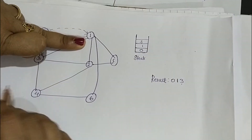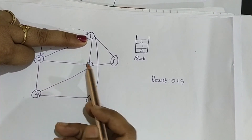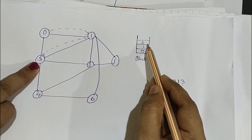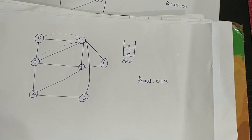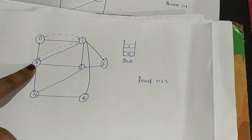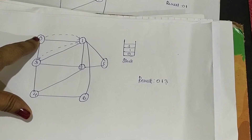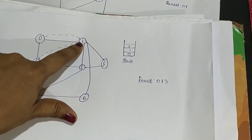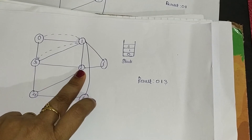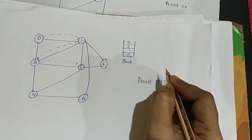Now we have to find any one unvisited vertex adjacent to 1. The unvisited adjacent vertices of 1 are 3, 2, 6, and 5. I am taking 3, traversing towards 3, pushing it into the stack, and printing it in the result. Now we have reached 3. The adjacent nodes of 3 are 4, 2, 1, and 0. Nodes 1 and 0 are already visited, so we take either 4 or 2. I am going to take 2, traversing towards 2, pushing it onto the stack, and printing 2 in the result.